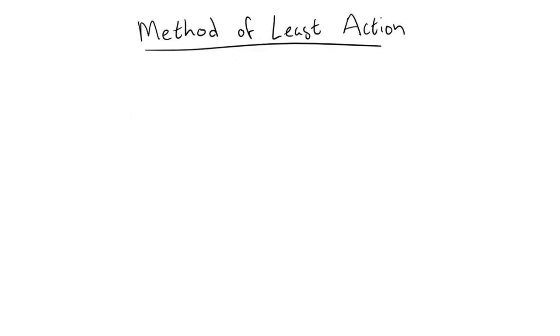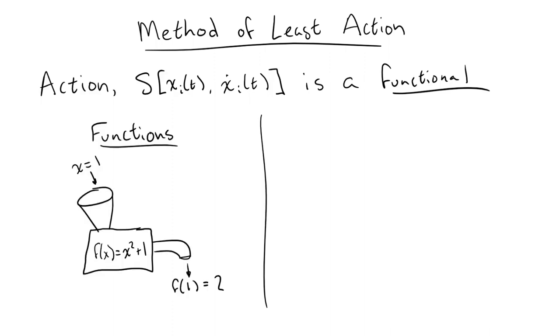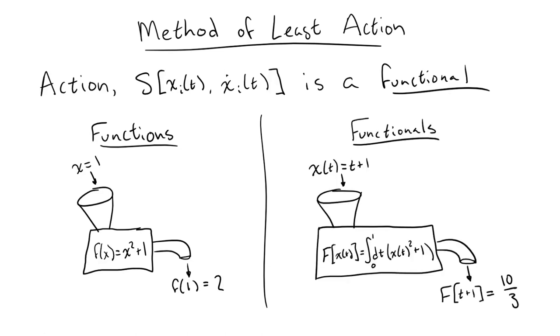As the name might suggest, this method uses a mathematical object called the action, which is a functional that depends on the time-dependent paths of all of the particles that make up the system. Just like how a function takes in a number or a set of numbers and spits out another number, a functional takes in a function or a set of functions and spits out a number. This means that typically, functionals are written as definite integrals that involve the input functions.